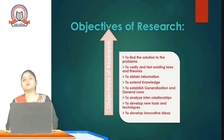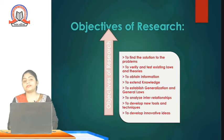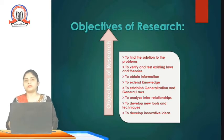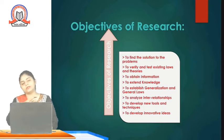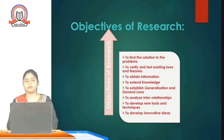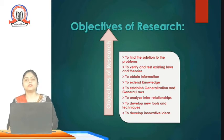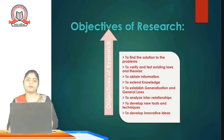Seventh, to develop new tools and techniques — while doing research, the researcher often comes across and develops new tools and new theories. For example, Theory X and Y already exists; while studying that, another theory emerges — Theory Z of motivation of human resources. Eighth, to develop innovative ideas. These are all the objectives and purpose of doing research.